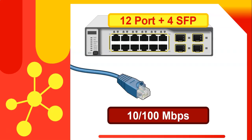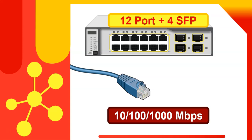The speed for the switches will also be in the specifications, and you get a variety of different speeds and ranges of speeds that data will be able to be transmitted over this network. For example, potential speeds include 10 to 100 megabits per second, or even 10/100/1000 megabits per second, and you can get even faster than that as well.